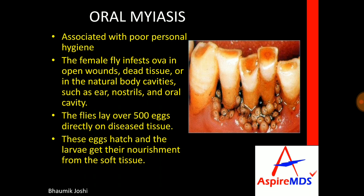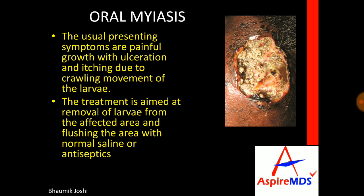It is associated with poor personal hygiene. In oral myiasis, the female fly deposits its ova in open wounds, dead tissue, or directly in the oral cavity. Other parts included are the ear and nostrils. Usually the flies will lay over 500 eggs directly in the tissue. The eggs are hatched in the tissue and they get nourishment from the soft tissue blood supply. They are usually present as painful growth with ulceration and itching due to the crawling movement of the larvae. Treatment is aimed at removal of the larvae from the affected area and flushing the area with normal saline and antiseptics.